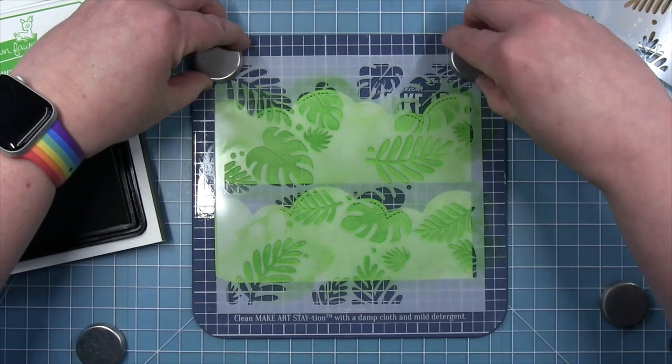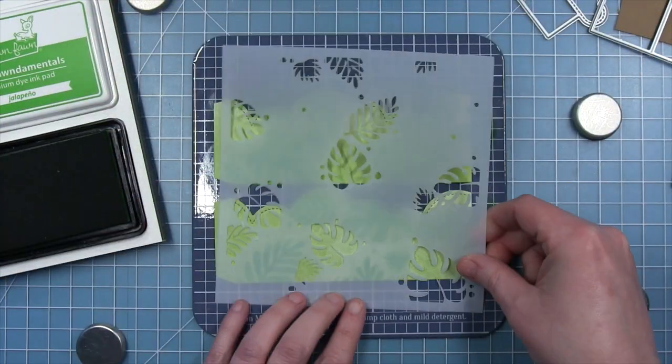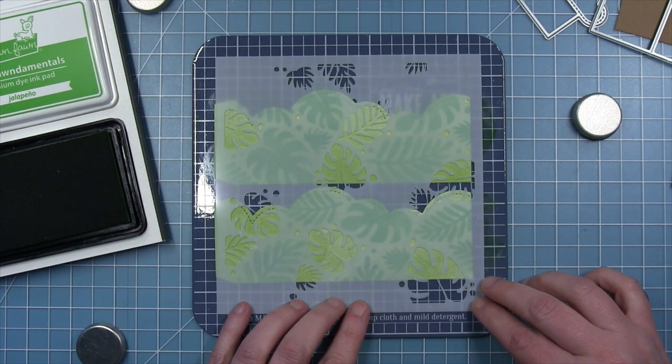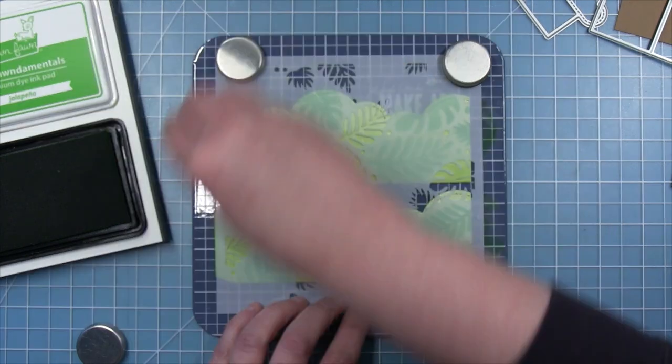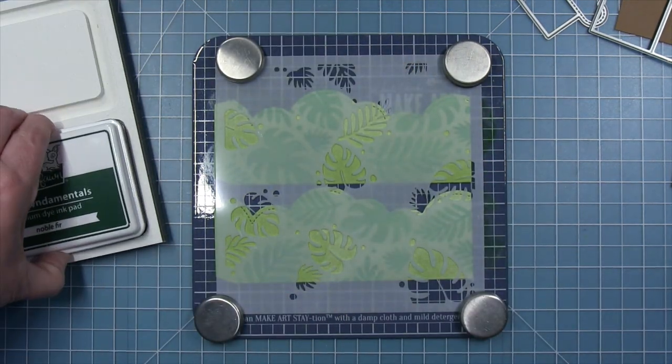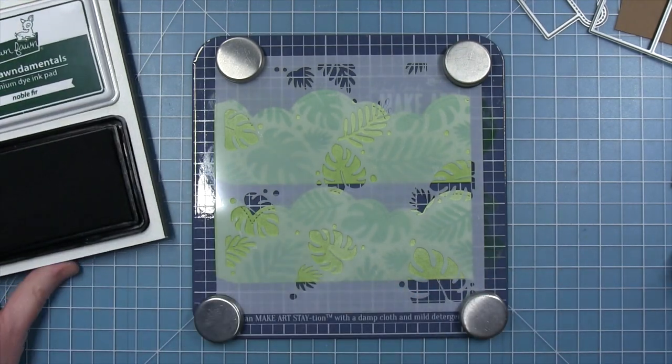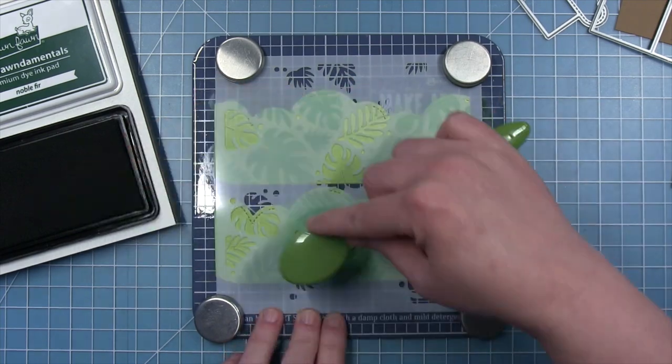I did also use the grid on my mat to help line up my stencils, so that will help me easily line up the second one using those squares. So this is going to fill in those voids that the first stencil left. And for this one, I'm using Noble Fur ink. So this is a bit darker. And we're going to get two colors of leaves.